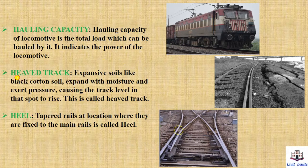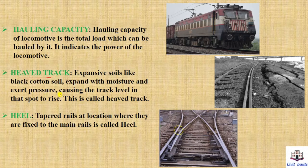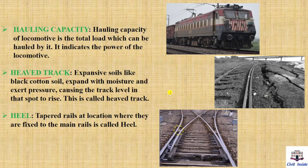Next, heave track. Expensive soils like black cotton soil expand with moisture and exert pressure, causing the track level in that spot to rise. This is called a heave track. Where there are black cotton soils, they exert pressure and moisture causes the track to rise, as shown in the image.